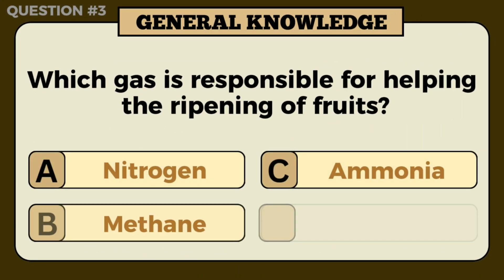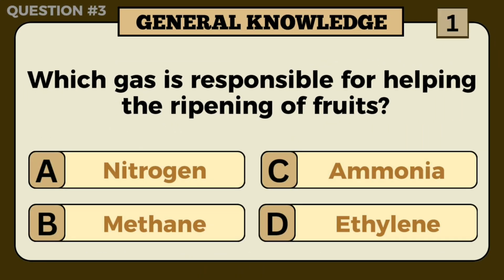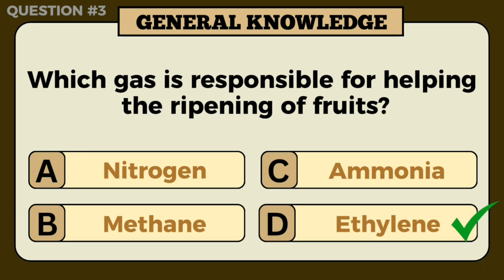Which gas is responsible for helping the ripening of fruits? Answer: D — Ethylene.